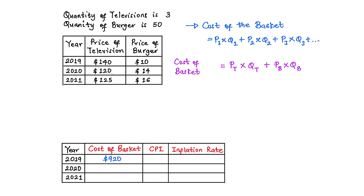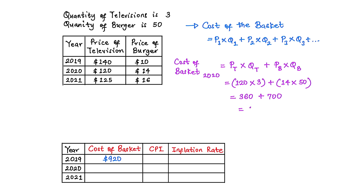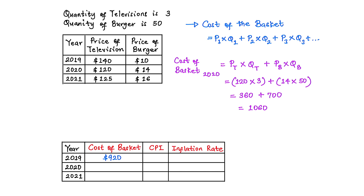Moving on to 2020, the cost of the basket equals the price of television (120 dollars) times the fixed quantity (3 units), plus the price of burger (14 dollars) times the fixed quantity (50 units). So we have (120 × 3) + (14 × 50) = 360 + 700 = 1060 dollars. The cost of the basket in 2020 is 1060 dollars.